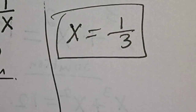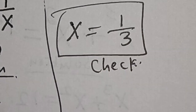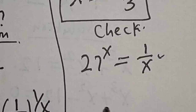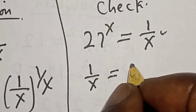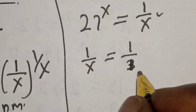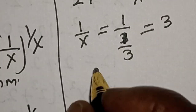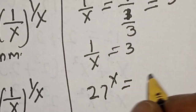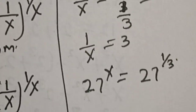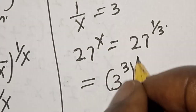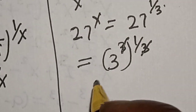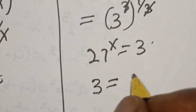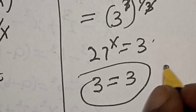We can check to confirm if our answer is right or wrong. We have the given equation: 27 raised to power x is equal to 1 over x. For the right hand side: 1 divided by x is equal to 1 over (1/3), which equals 3. Therefore 1 divided by x is equal to 3. For the left hand side: 27 raised to power x is equal to 27 raised to power 1 over 3, which equals 3. Therefore the left hand side 3 is equal to right hand side 3. We satisfy the given equation at x equals 1 over 3.